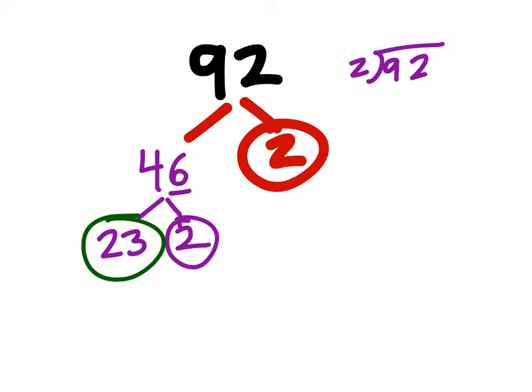Now there's several ways we could know that it's prime because 2 plus 3 is 5 which is not divisible by 3 so 23 is not divisible by 3. It's not even so it's not divisible by 2.